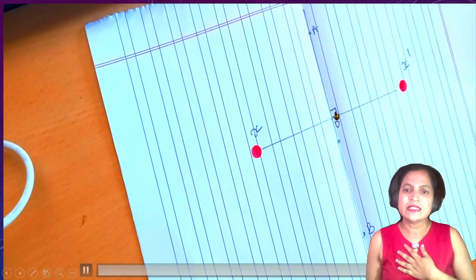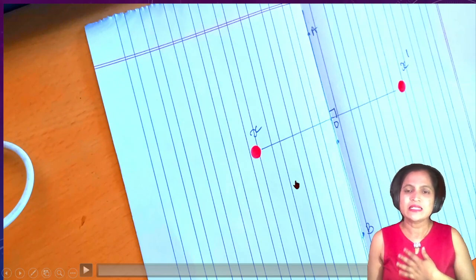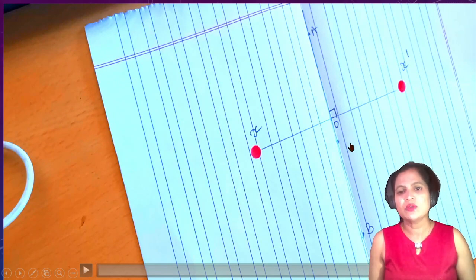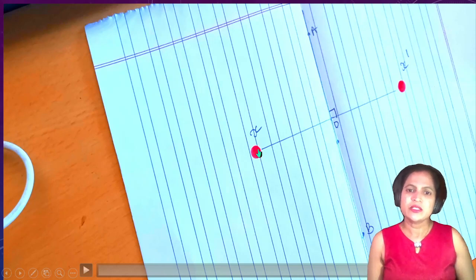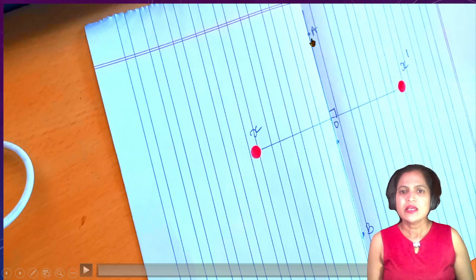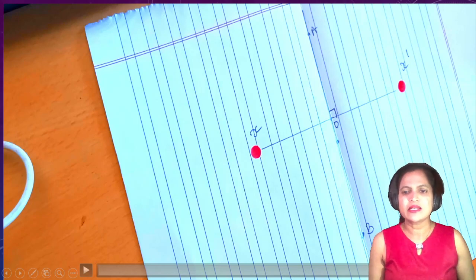This is 90 degrees. AB bisects XX'. You will get the perpendicular line here because AB bisects XX'. Therefore, XO equals OX'. AB is bisecting XX', and this angle is 90 degrees. These four angles are 90 degrees here.